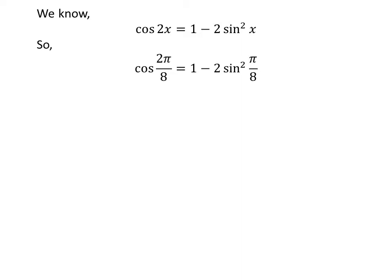Let us plug pi upon 8 in place of x in the above identity. So cosine of 2 times pi upon 8 is equal to 1 minus 2 times the square of sine of pi upon 8. Cancelling out the common factor 2 in the numerator and denominator gives us cosine of pi upon 4 is equal to 1 minus 2 times the square of sine of pi upon 8.